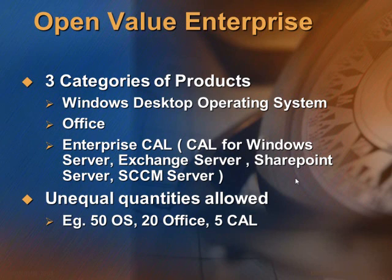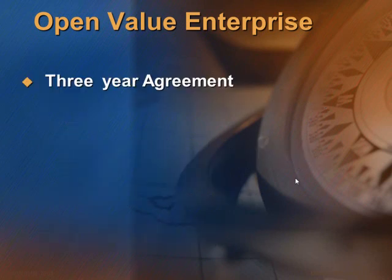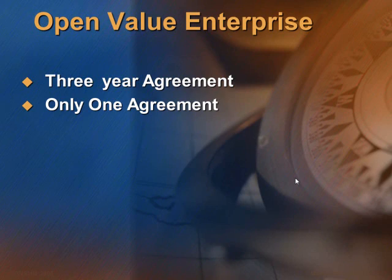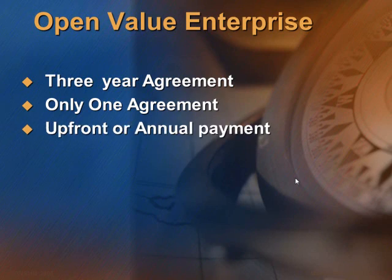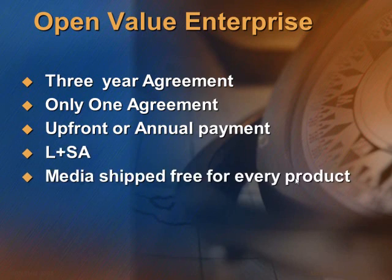So essentially you can make a mixed quantity purchase of these three categories in Open Value, and you can start off with 5 licenses. It's a three-year agreement to purchase the software, and any additional products can be purchased under the agreement. You will thus create only one Open Value agreement. The products you include must be a combination of license and Software Assurance. During the year you can add more products and you will be charged on a pro-rata basis. All media are shipped free to you under Open Value Enterprise.